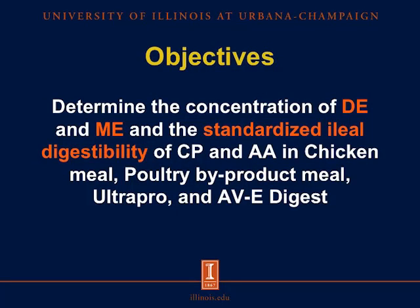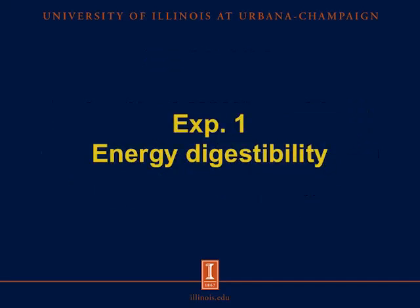The objectives for these two experiments are to determine the concentration of DE and ME, and the standardized ileal digestibility of crude protein and amino acids in chicken meal, poultry by-product meal, ultra-pro, and ABE digest. Now let's move on to the first experiment: energy digestibility.